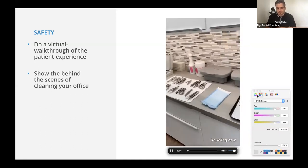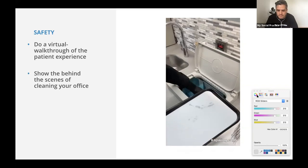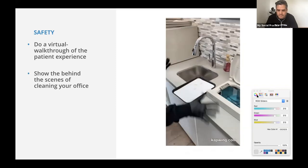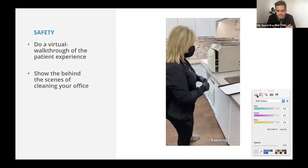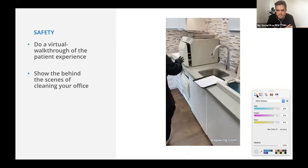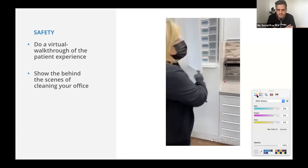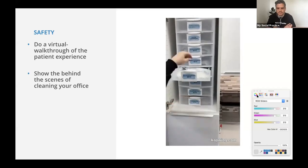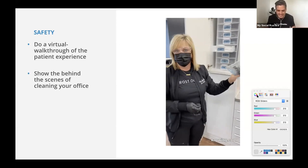This sterilization room walkthrough shows: after every appointment, dirty instruments go into an ultrasonic bath where they shake and clean all debris off. Then they get bagged into sterilization pouches and go into the autoclave, which kills any bacteria. Once out of the autoclave, they stay in the sterilization pouches until opened at the station with you. Many people might not even know what an autoclave is — this is an opportunity to explain that and again give patients that peace of mind.